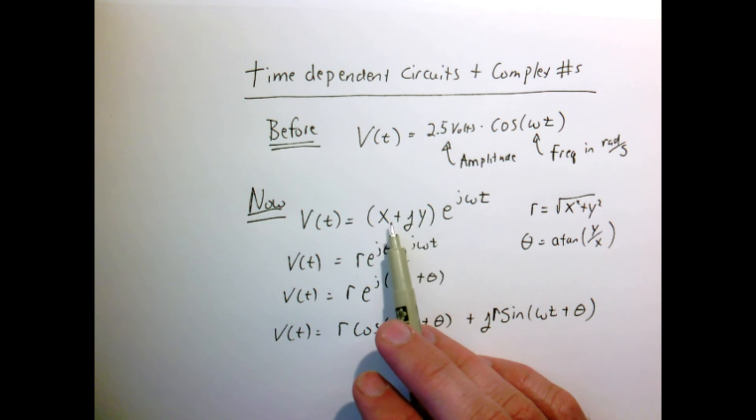And the angle, or how much real part and how much imaginary part, is giving us some sense of an angle or a phase that we talked about before when we analyzed these types of time dependent circuits.